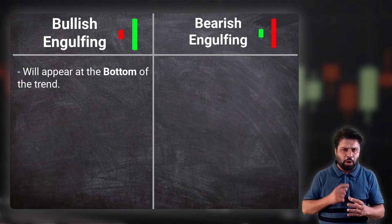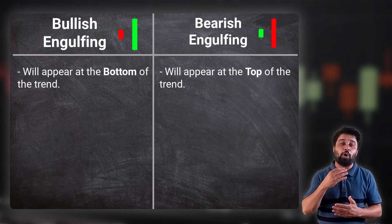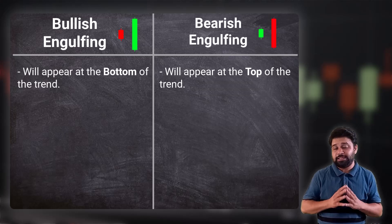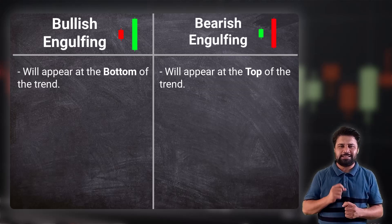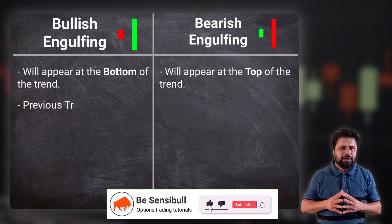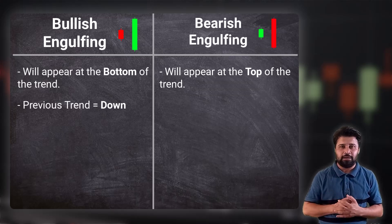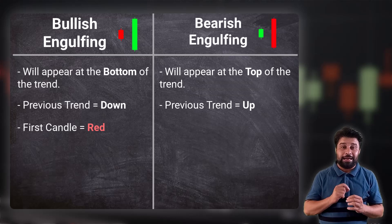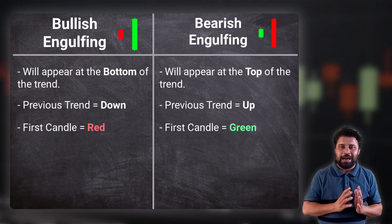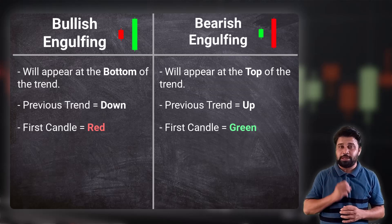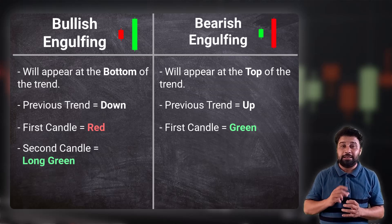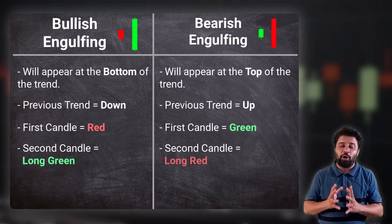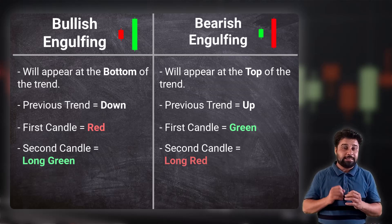The bullish engulfing pattern will appear at the bottom of the trend and the bearish engulfing pattern will appear at the top of the trend. The formation of these engulfing patterns signals a change in the trend. For the engulfing pattern to form, certain criteria need to be satisfied. Number one: the previous trend should be a downtrend in case of a bullish engulfing pattern, and an uptrend for a bearish engulfing pattern. Number two: the first candle should be a red candle in case of a bullish engulfing pattern, and a green candle in case of a bearish engulfing pattern. Number three, and the most important point: the second candle should be a long green candle in case of bullish engulfing and a long red candle in the case of bearish engulfing — large enough to engulf the body of the previous candle. This shows that the long candle has engulfed the previous candle and changed the trend.